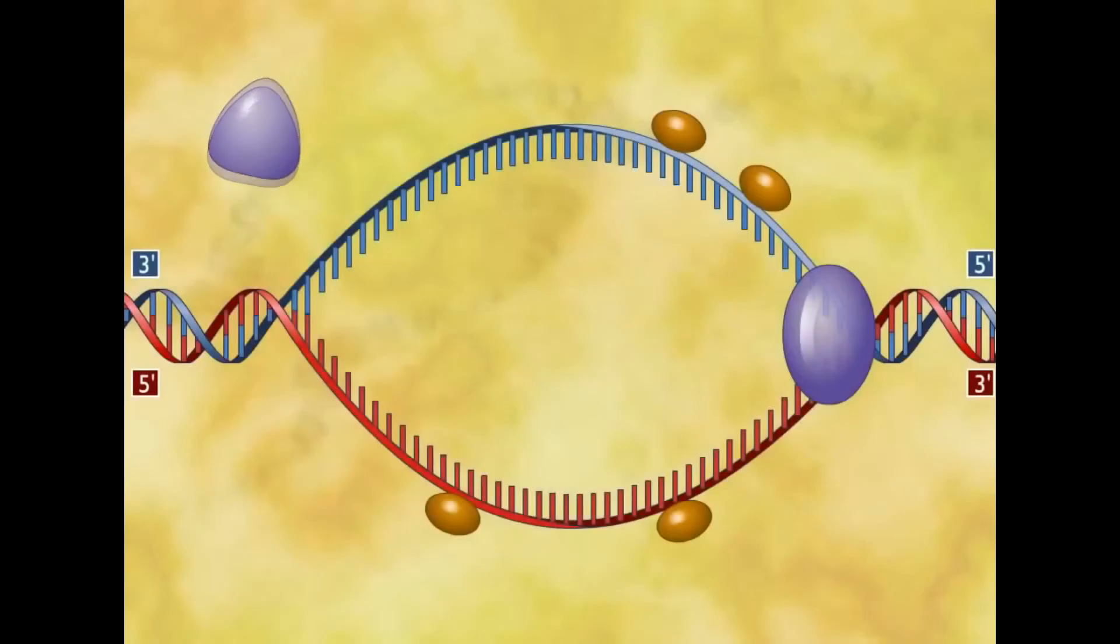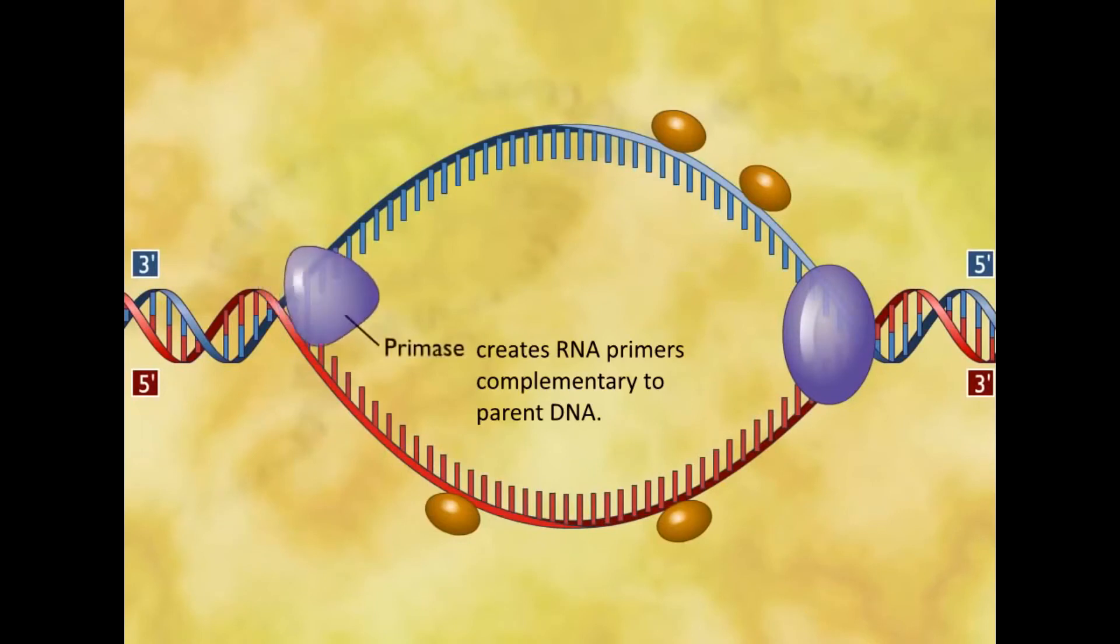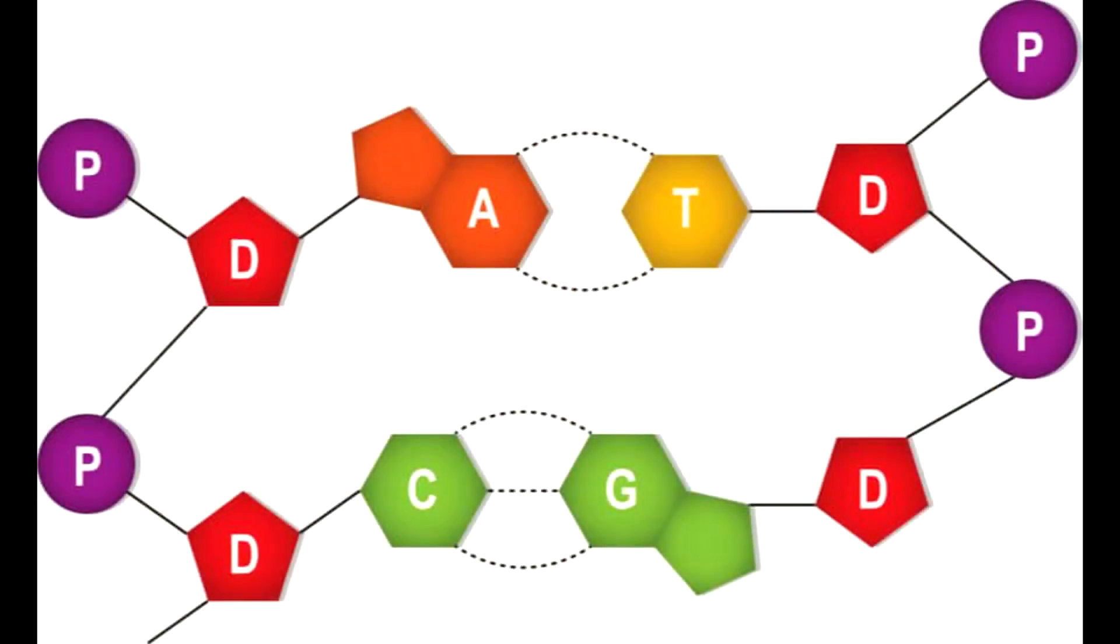To start DNA replication, an RNA primer called primase creates RNA primers complementary to parent DNA. The bases attached to each strand then pair up with the free nucleotides found in the cytoplasm.